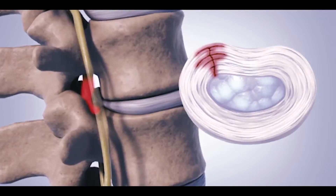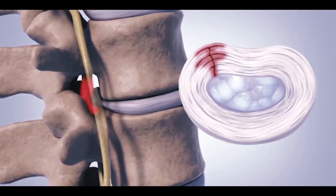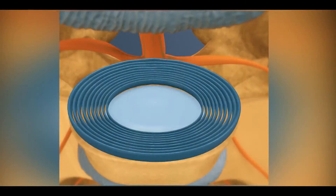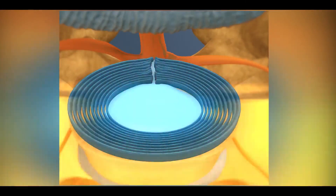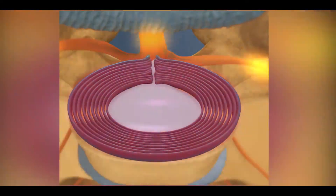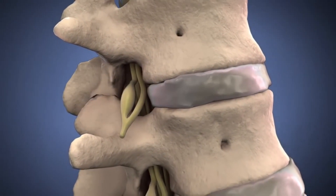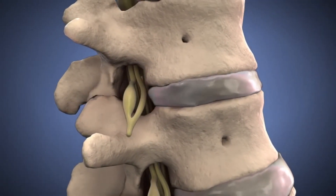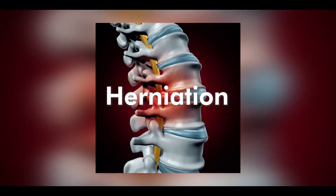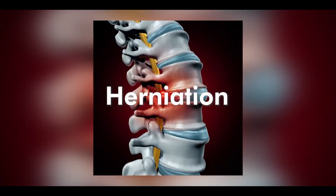Due to some reasons, if the intervertebral disc ruptures — for instance, the lumbar disc — the disc material releases into the outer space and compresses the nearby nerves. The ruptured disc is called a herniated lumbar disc and the condition is called disc herniation.